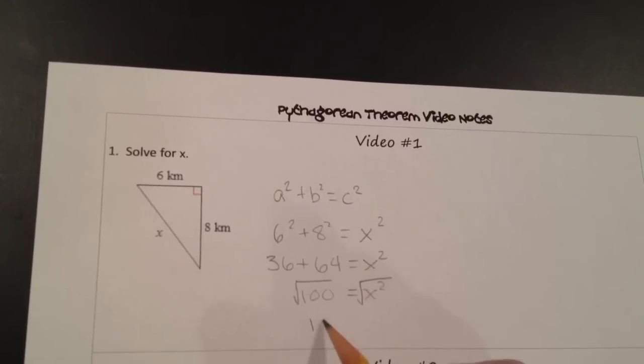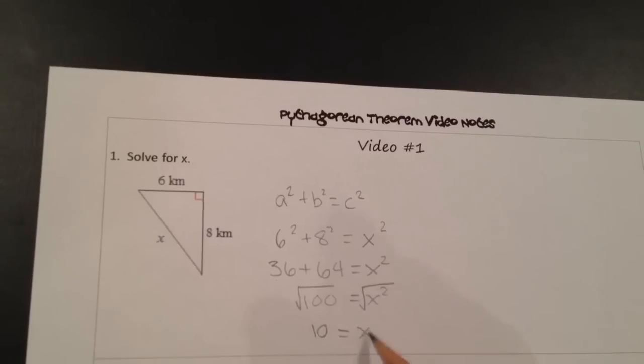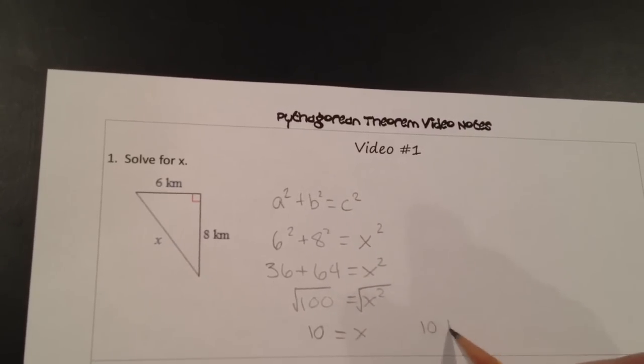So the square root of 100 is 10. So x equals 10 kilometers.